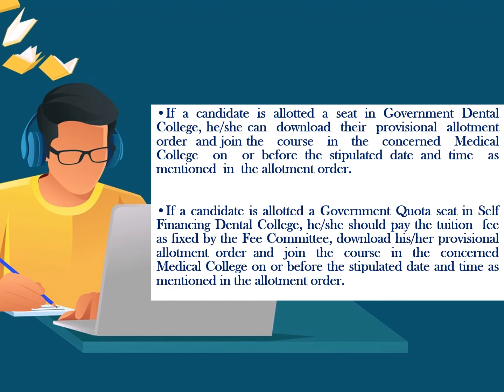After choice locking, the results will be announced on 8th October. If you are allotted a seat in a Government Dental College, you have to download the provisional allotment order and report to the college before the stipulated date and time.